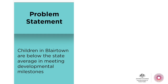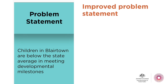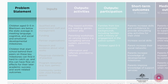Here's an improved version: 'Children aged zero to five in Blair Town are below the state average in meeting language, cognitive and social and emotional developmental milestones. Children that start school behind their peers on these key milestones can find it hard to catch up, and this can have flow-on effects for their later academic success and work-related outcomes.' That's a much stronger problem statement. Pause here if you want to do some work on your template.